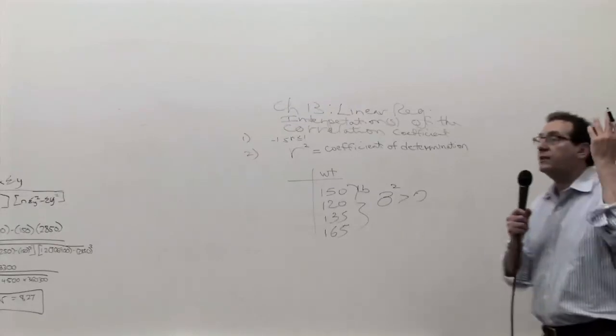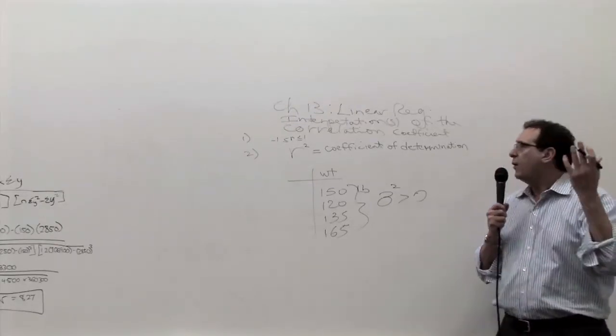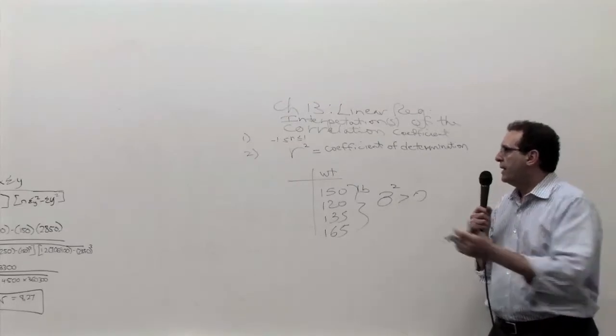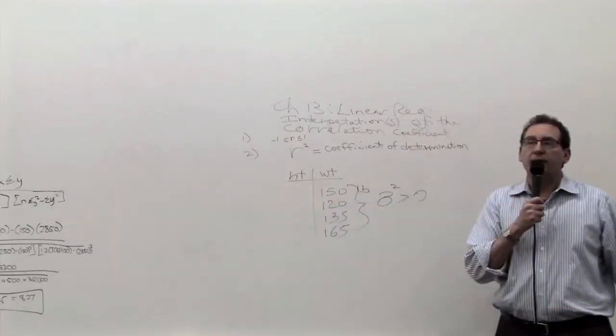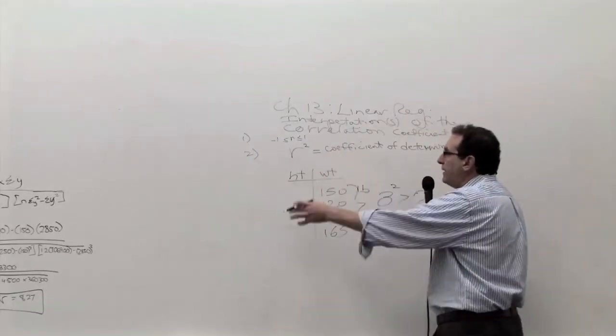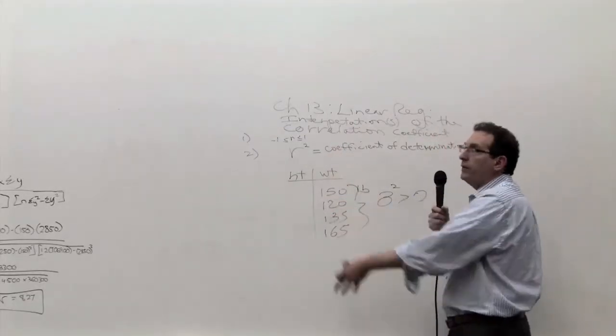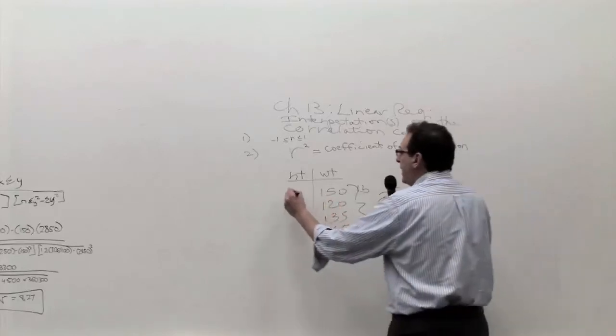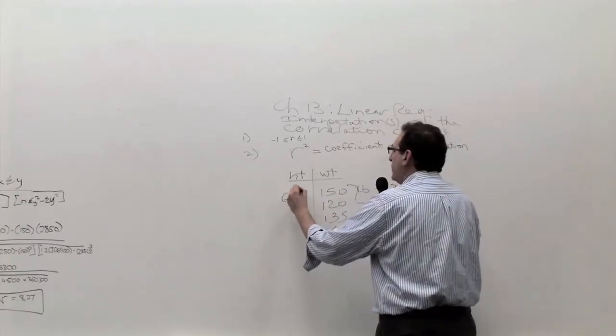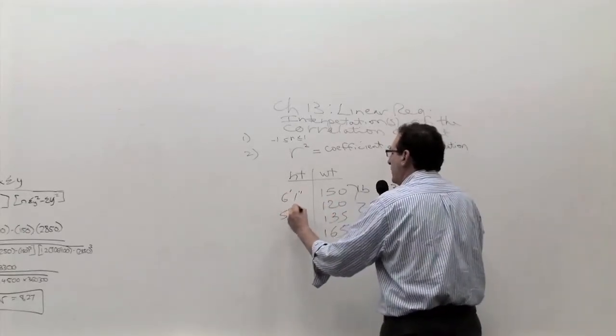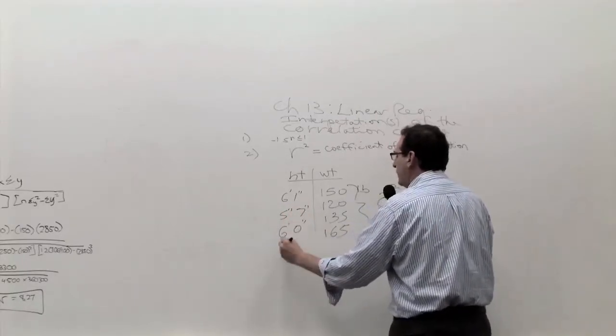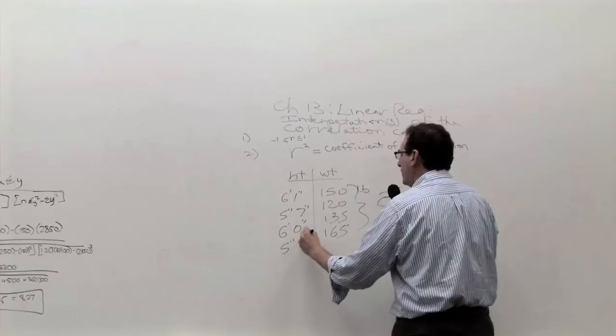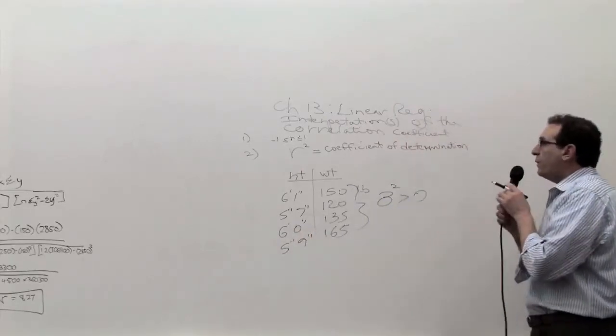So some brilliant scientist has the idea, what could be influencing that weight? He says, I think maybe somebody's height might influence their weight. So they say, okay, let's do a study. Let's take people's height and weight, like 25 people or 100 people, whatever. Six foot one inch, five foot seven inches, six feet zero inches, five feet nine inches.